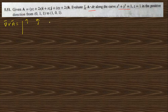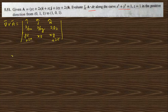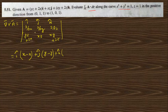Setting up the determinant with i cap, j cap, k cap, del/del x, del/del y, del/del z, and components yz + 2x, xz, and xy + 2z. Computing: i cap of del/del y of (xz) gives xz; j cap of del/del z of (y) minus del/del x of (y) gives 0; k cap of del/del x of (z) minus del/del y of (z) also gives 0. So the curl of A is 0.